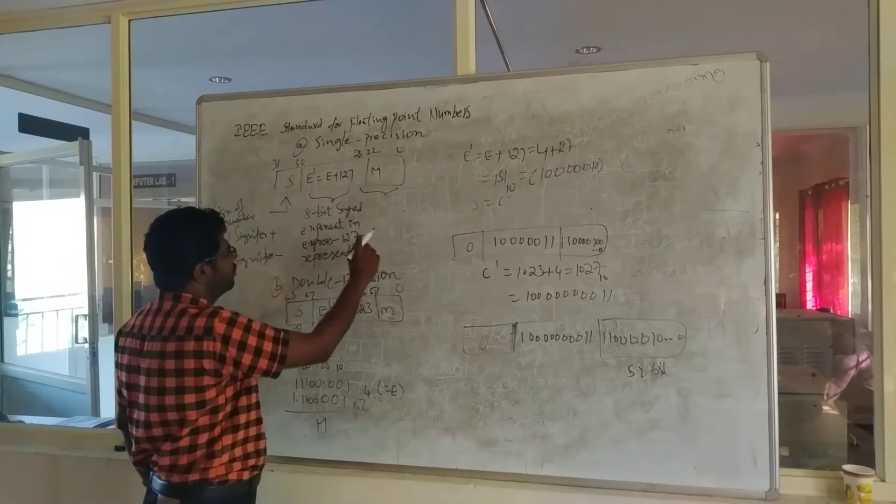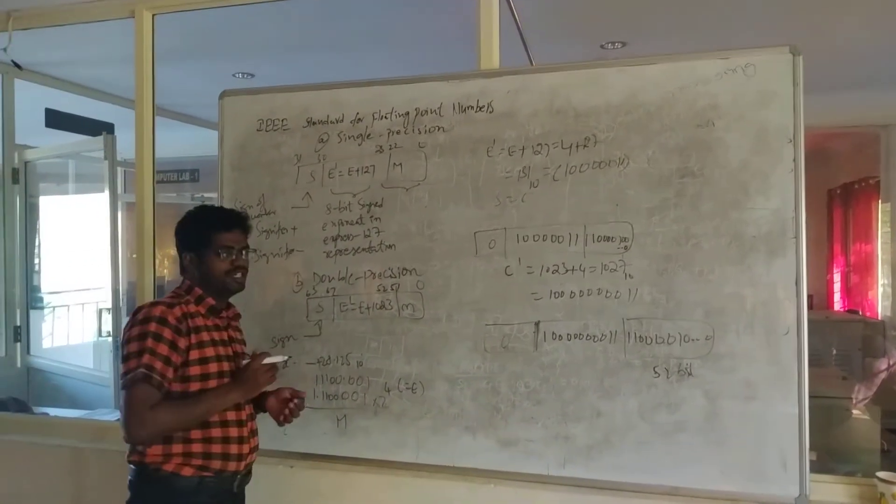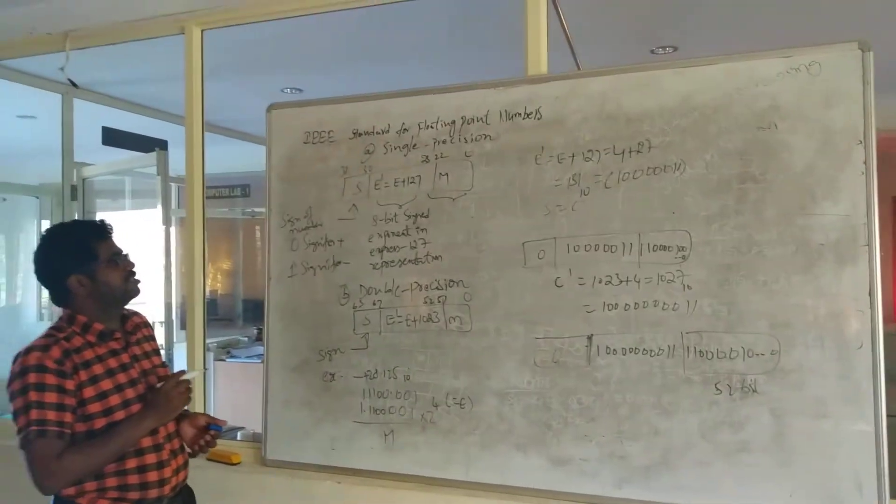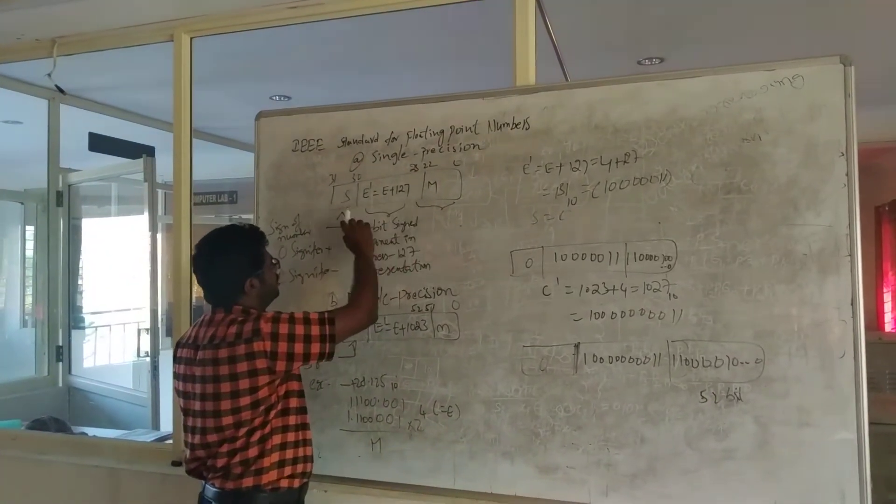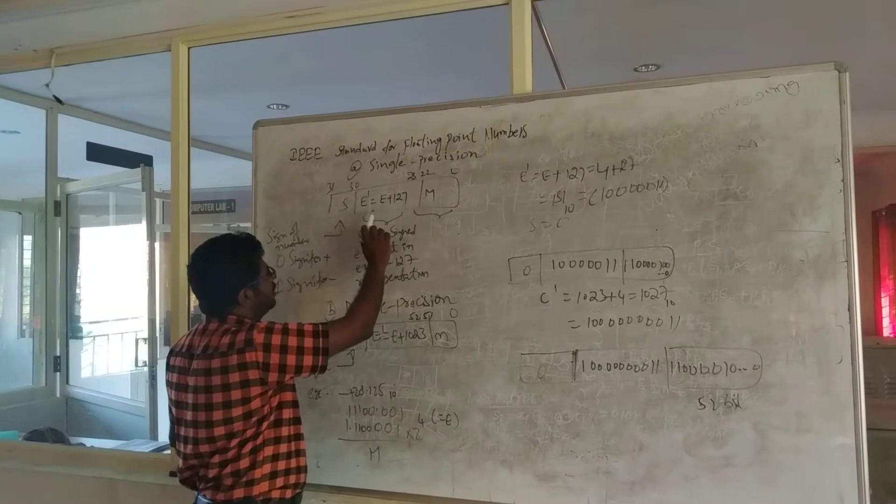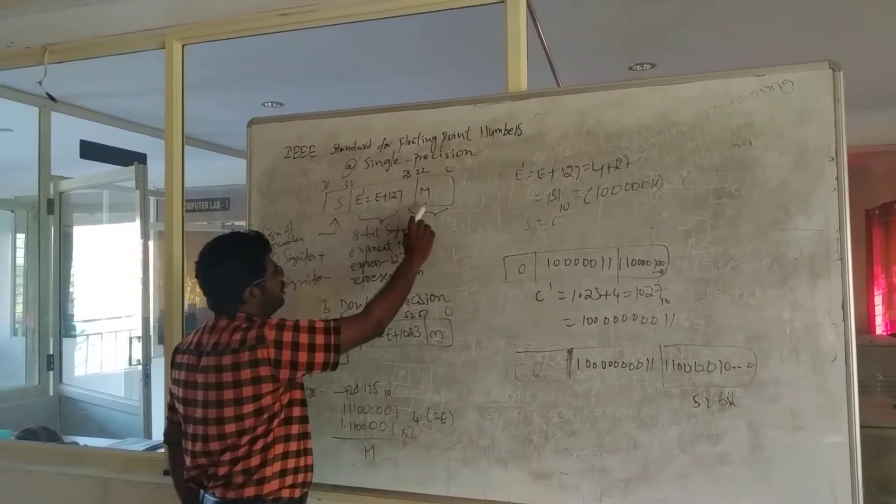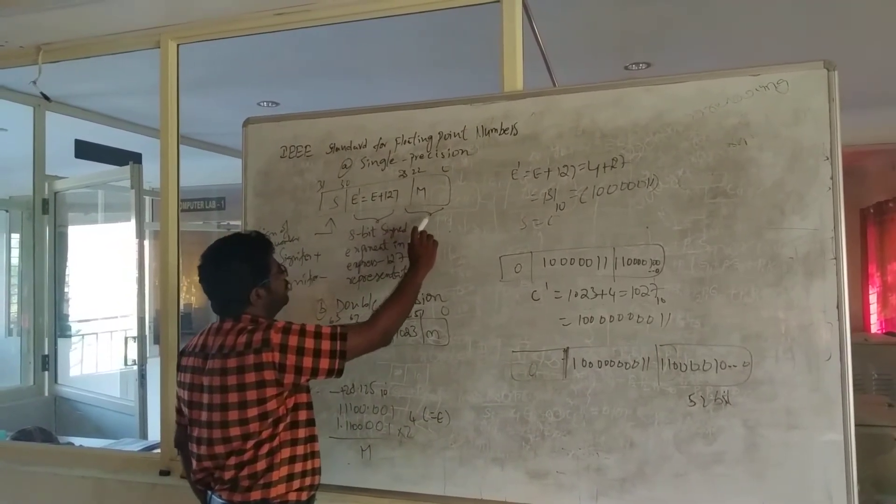So how do you represent single precision? The single precision has a structure where S stands for sign bit, and E' equals exponent E plus 127, and M is called the mantissa bits.